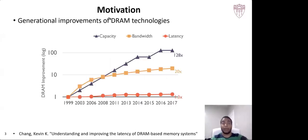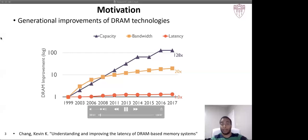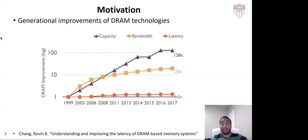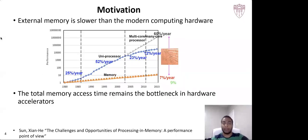Looking at the generational improvement in DRAM technologies over the past few decades, we can clearly see that even though the capacity of these technologies has improved around 130x, the bandwidth has only improved by 20x. Making things worse, the latency of these DRAM technologies has only improved by 30%. When we compare how the computing power of CPUs has improved over the years with the total memory access time, we can see that there is a huge gap between them. This scenario is called the memory wall.